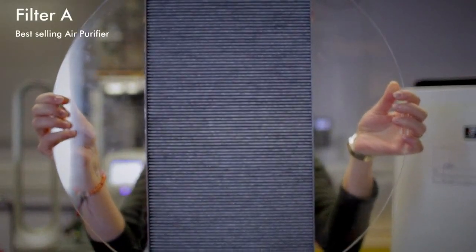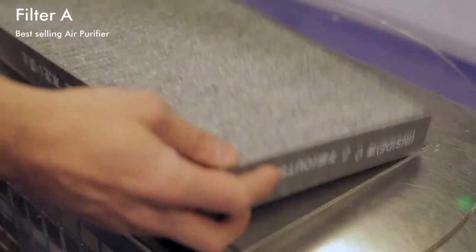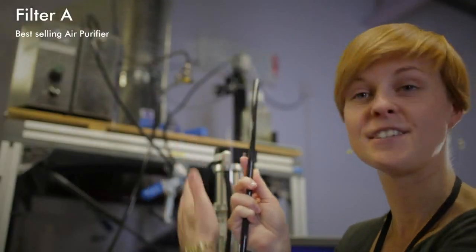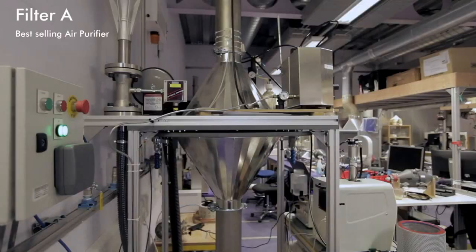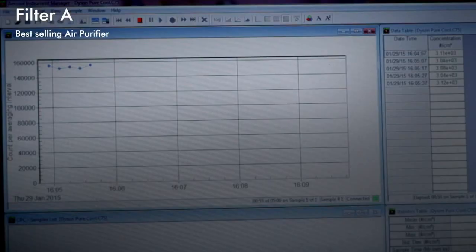This is the filter of best-selling air purifier machine. We are going to feed in controlled amount of particles through the filter in this test chamber. The reader shows about 150,000 particles going through the filter.